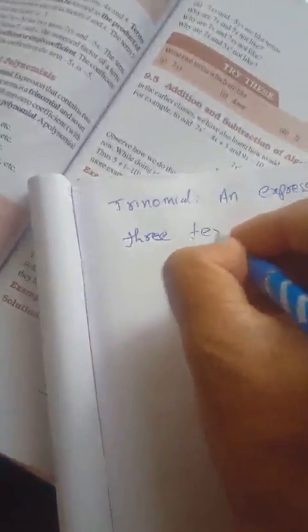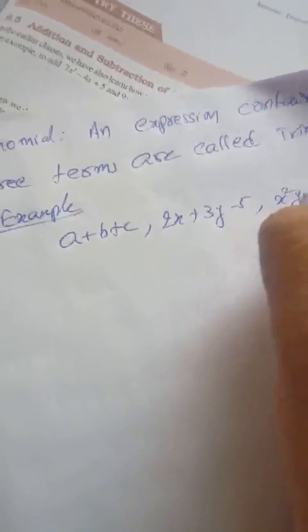Trinomial means an algebraic expression containing three terms. Examples of trinomials: a plus b plus c; 2x plus 3y minus 5; x²y minus xy² plus y² — any expression containing three terms is called a trinomial.